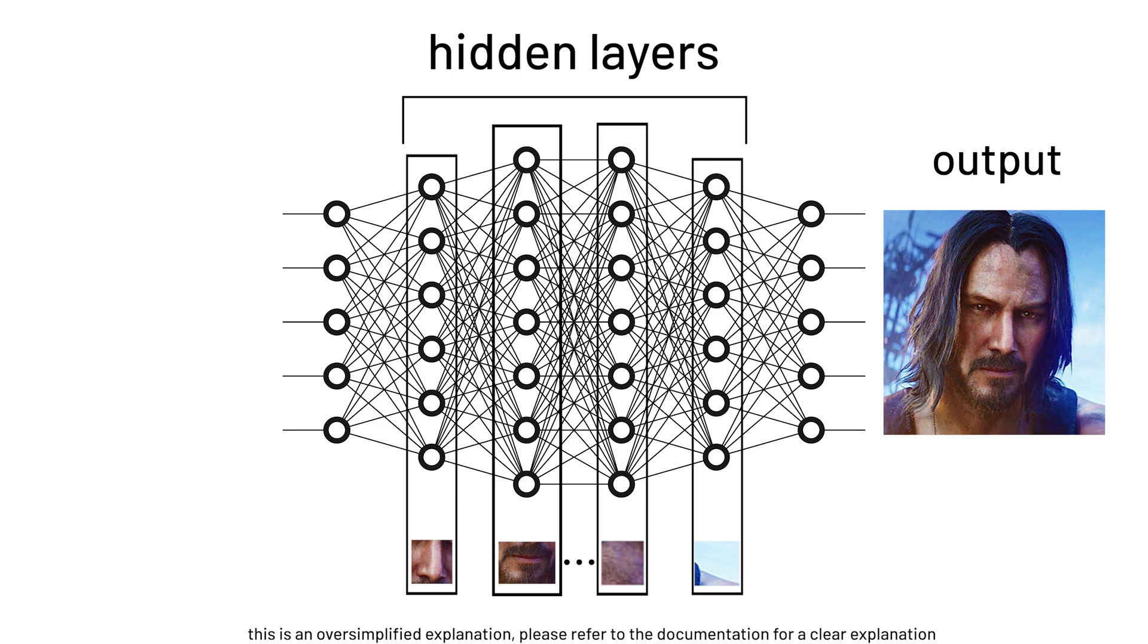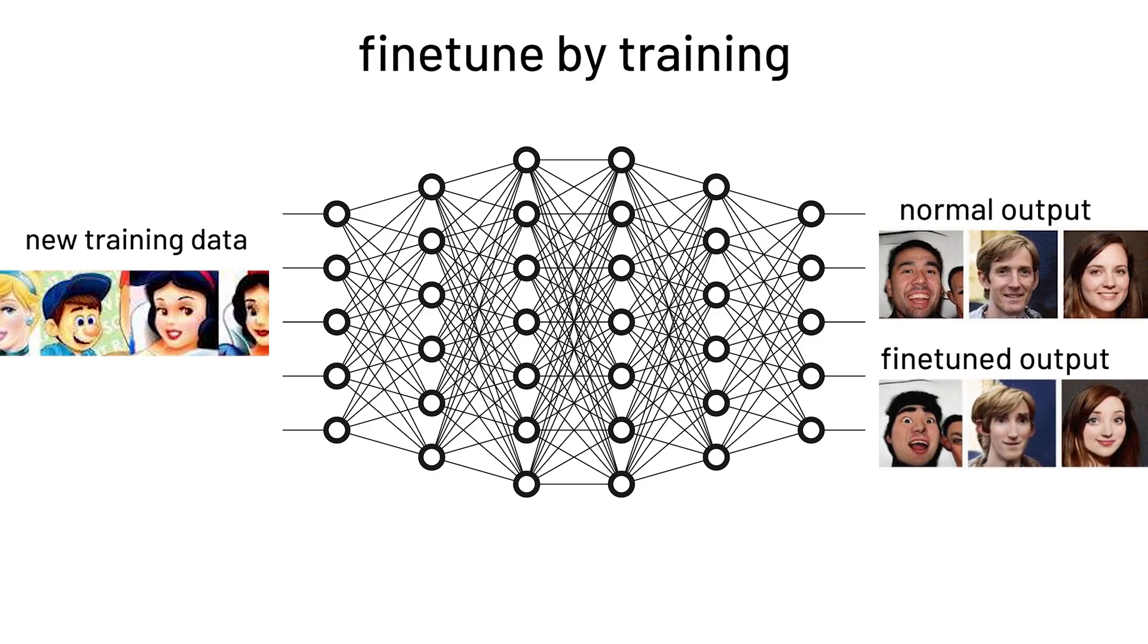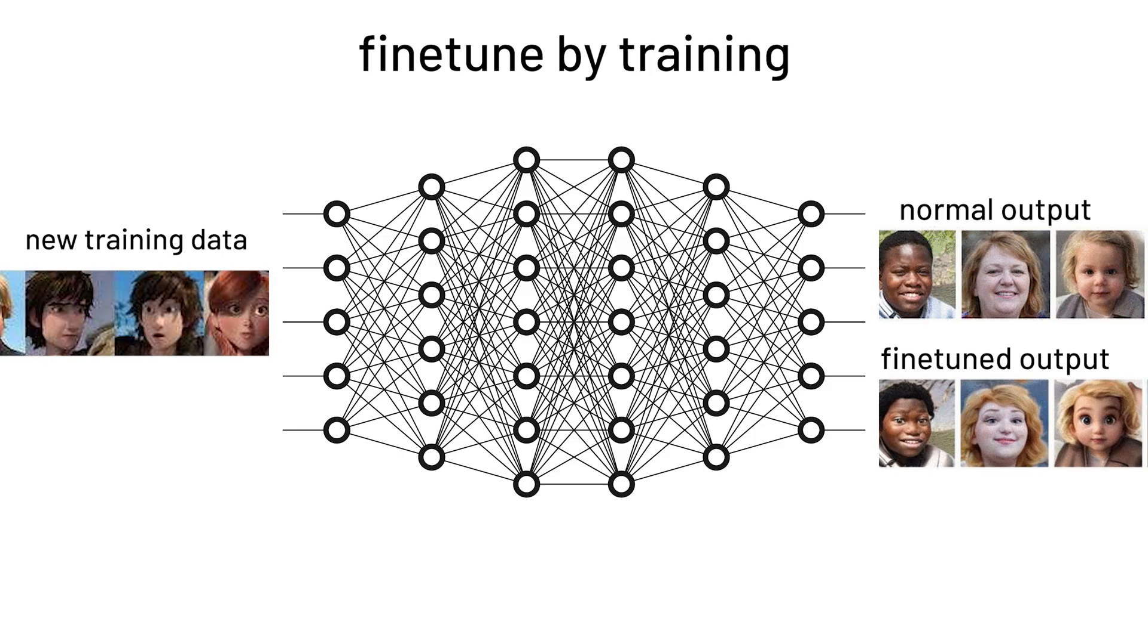So here is where today's main course comes in. What if we fine-tune the layers that will affect the features and transform the AI model into generating something more unrealistic?